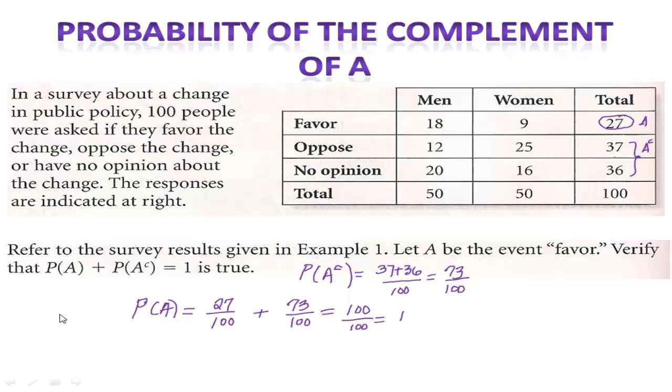So this is what the probability of A is, 27 over 100. If you add the complement of the probability of event A, which is everyone who didn't favor, which is the addition of those who opposed it and the ones who had no opinion on it, you should get 1.